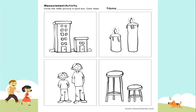We continue with our second worksheet. Continuamos con nuestra segunda ficha. Circle the taller picture in each box. Tienes que encerrar entonces la imagen que es más alta. Todas las imágenes que tienes aquí, corazón, vas a revisarlas y solo vas a encerrar las imágenes que representen a tall, alto. For example, we have here a building and a house. Which is tall? ¿Cuál es alto? Excellent. The building, el edificio. Entonces vas a encerrarlo y vas a colorearlo. Y así, en estos cuatro recuadros, vas a revisar cuál es la imagen que representa a tall, la encierras y la coloreas.